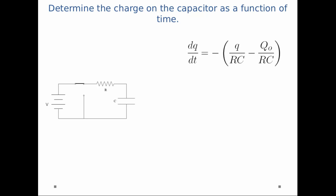So now I can rearrange dq dt is minus q over RC minus Q0 over RC. I can factor out the RC. I can rearrange the terms. I can put dq divided by q minus Q0 equal to minus dt over RC, and I can integrate.